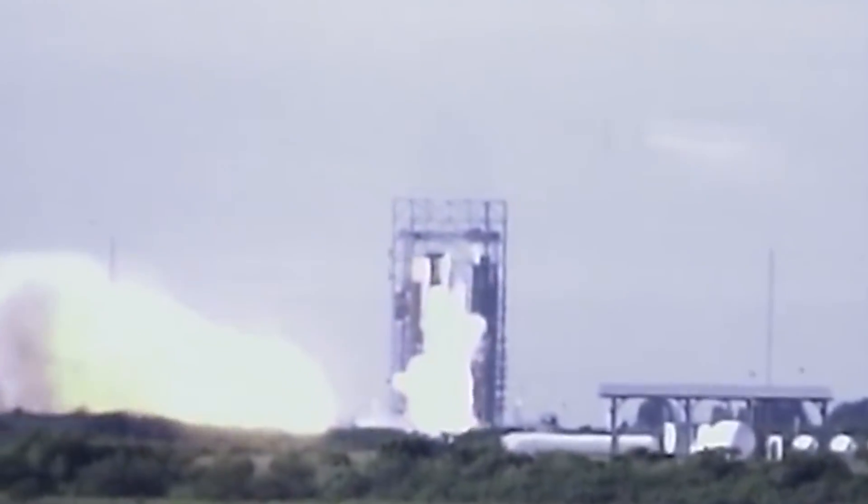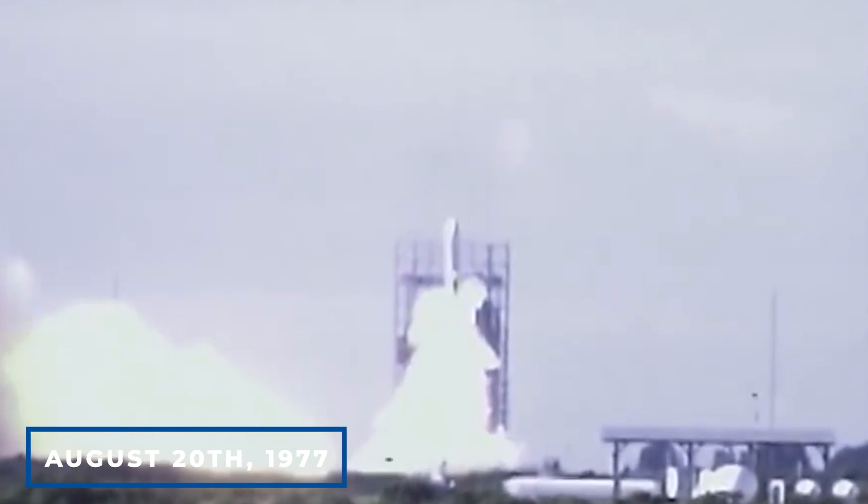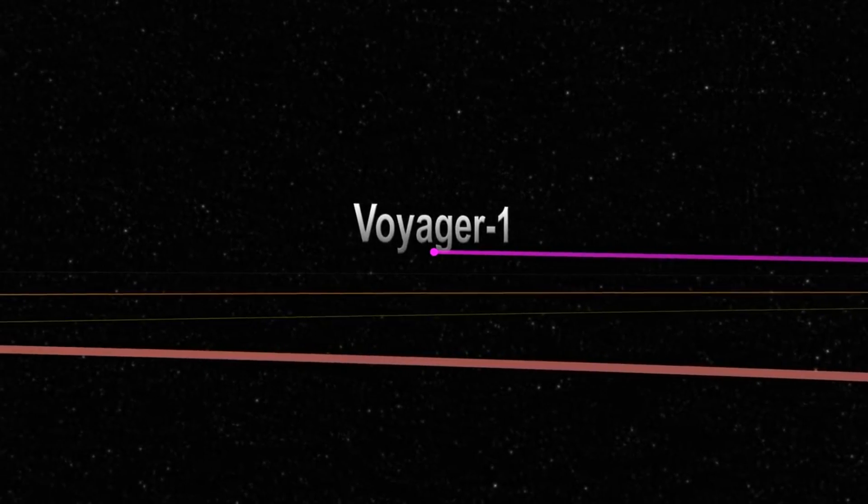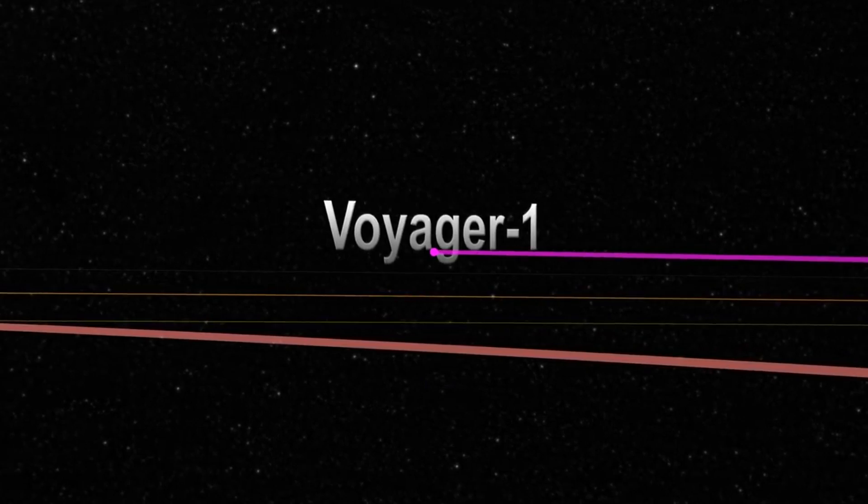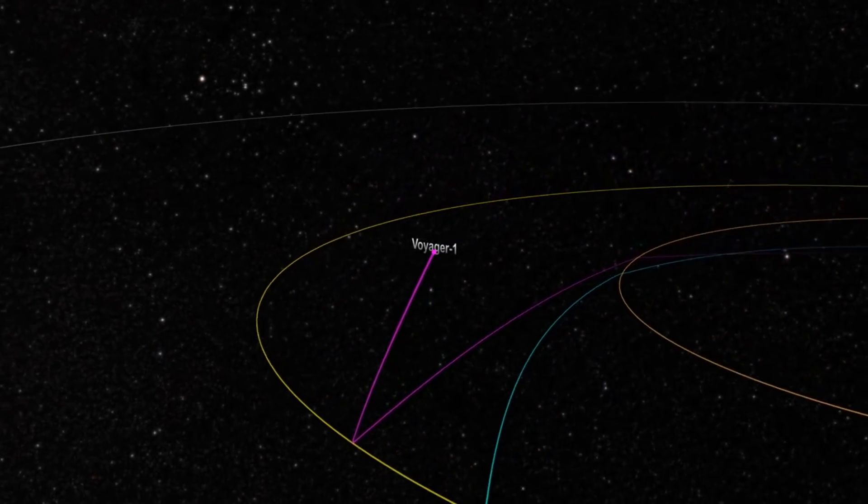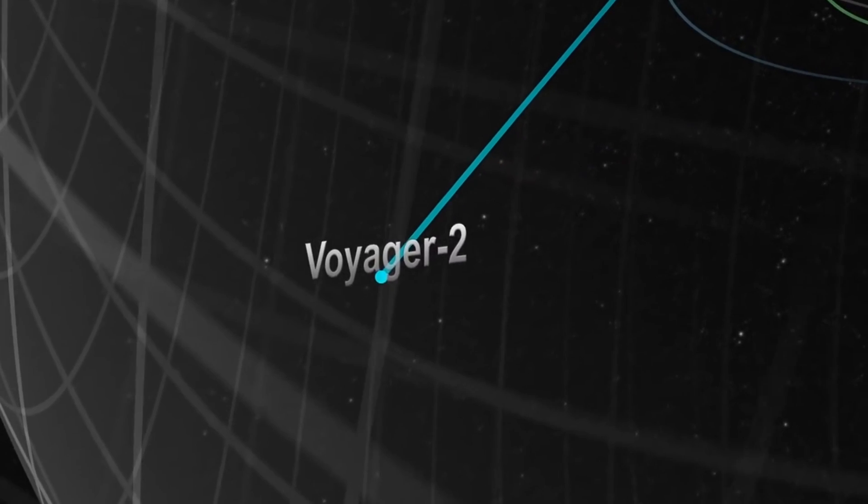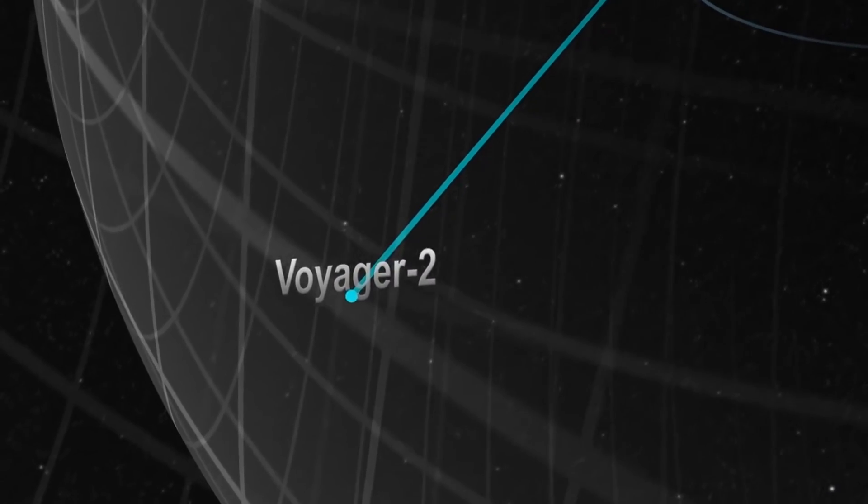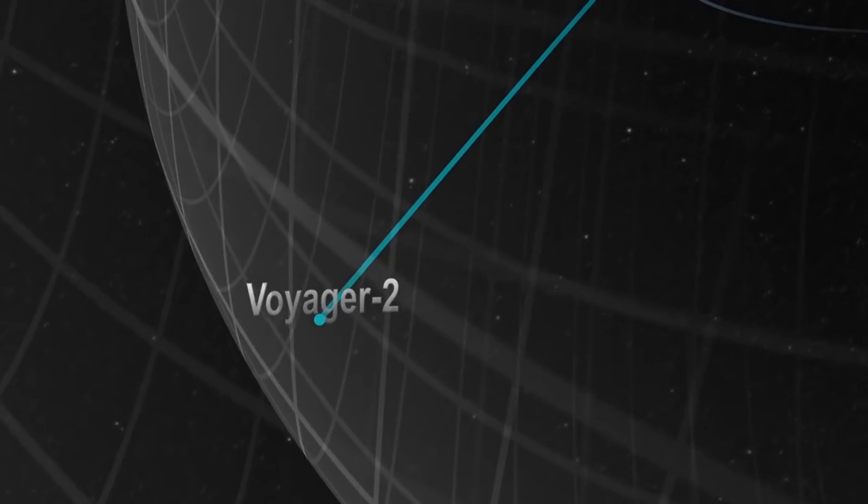While Voyager 2 launched first on August 20, 1977, Voyager 1 reached the boundary of the solar system first following a far quicker trajectory despite launching two weeks later. But the voyage to its present location just beyond our solar system was indeed a perilous one.